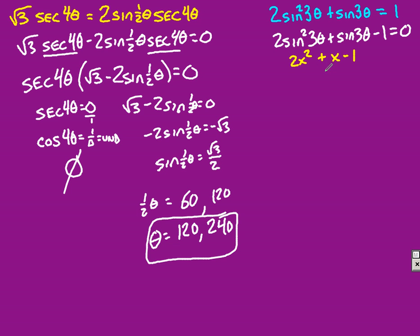Well, I would factor it by having factors like so. The 2x squared can only break up into 2x and x. Negative 1 can only break up into 1 and 1.